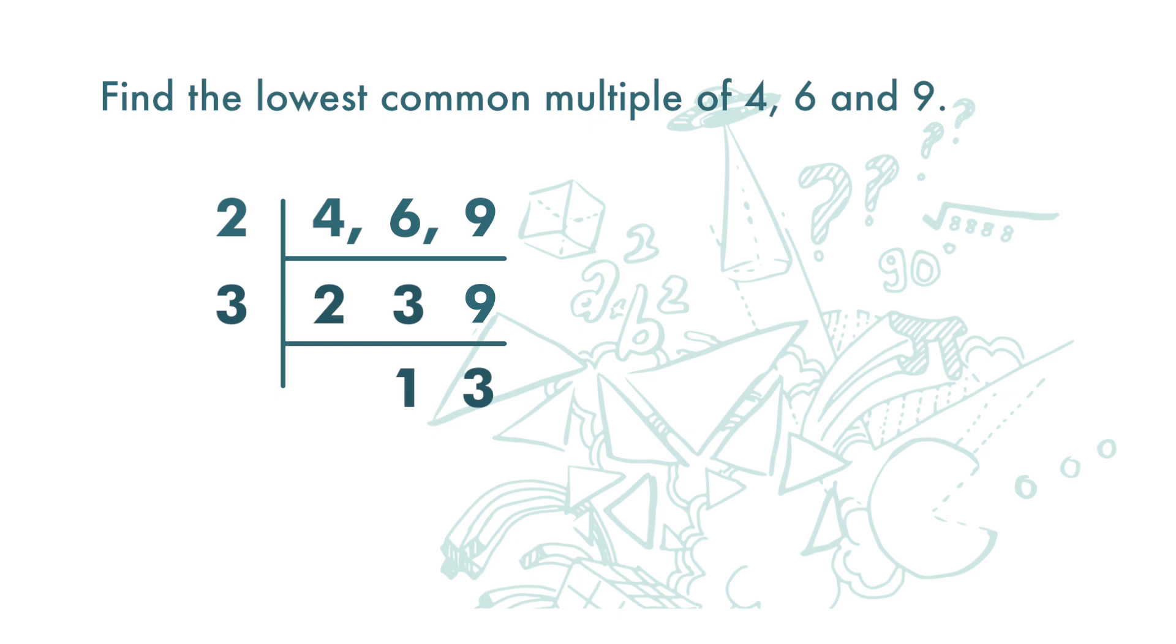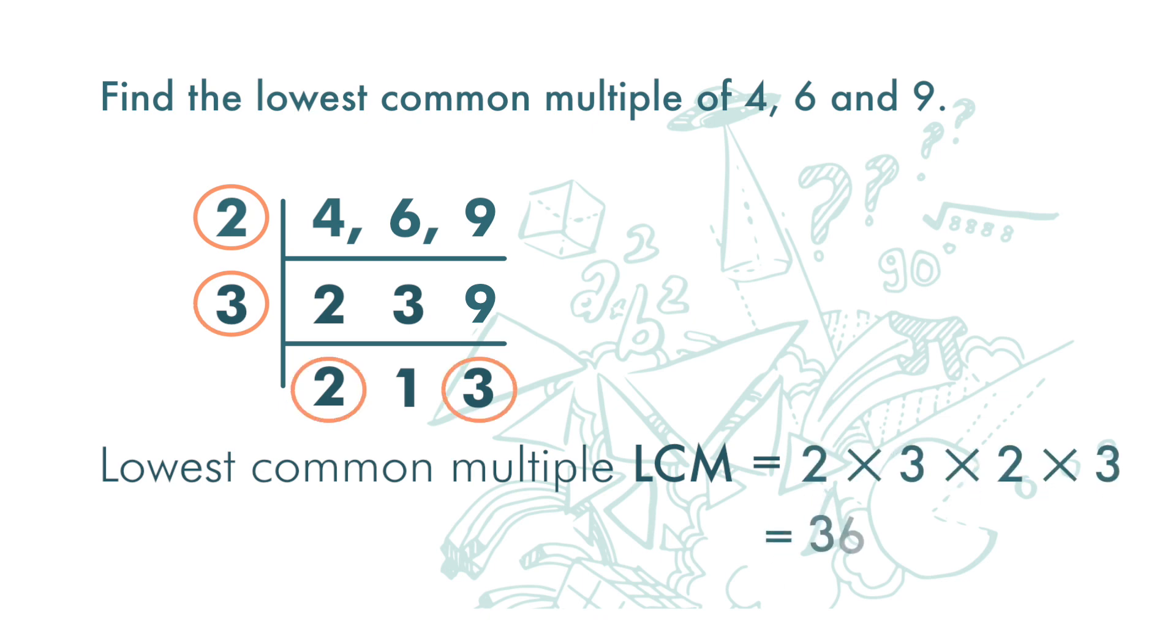We stop when there aren't even 2 numbers that can be divided by a common number. To get the lowest common multiple (LCM), we simply multiply all these numbers: 2 times 3 times 2 times 3, and the answer is 36.